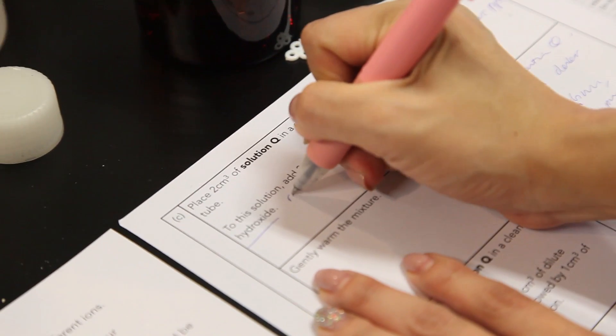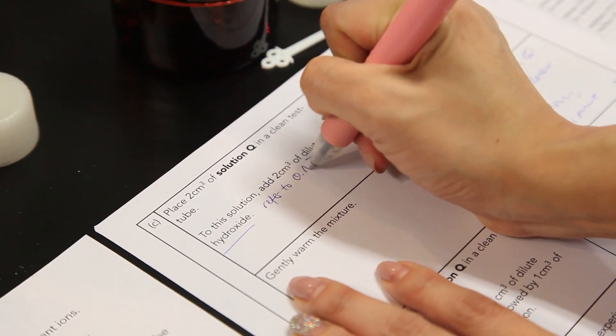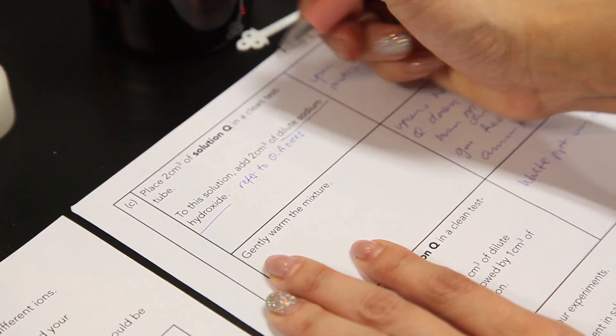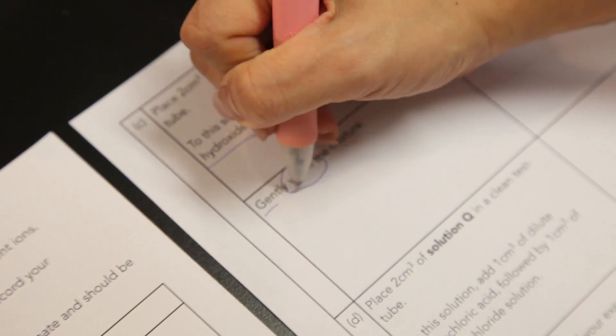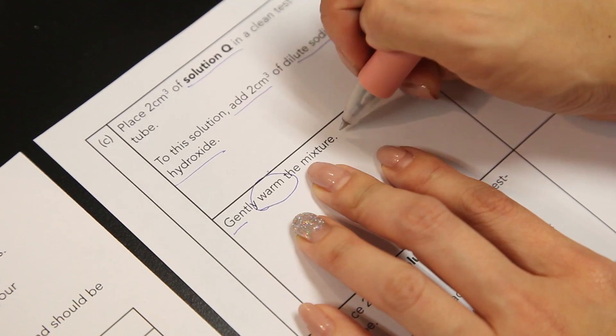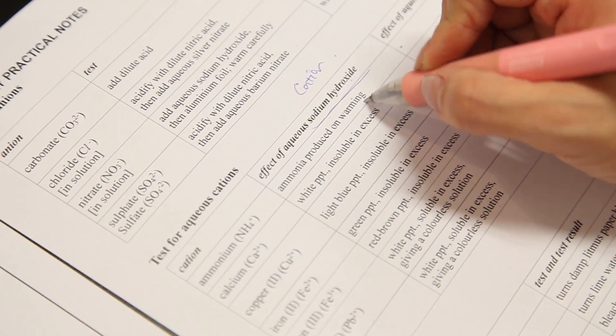Whenever sodium hydroxide is added, refer to QA notes. Over here, sodium hydroxide, cation test. Gently warm the mixture. When you warm the mixture, the only one that requires you to warm is ammonia.